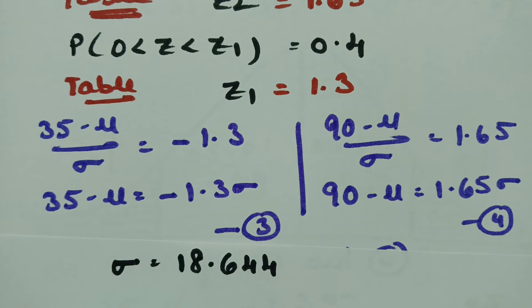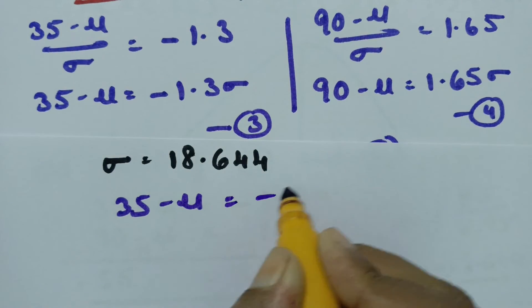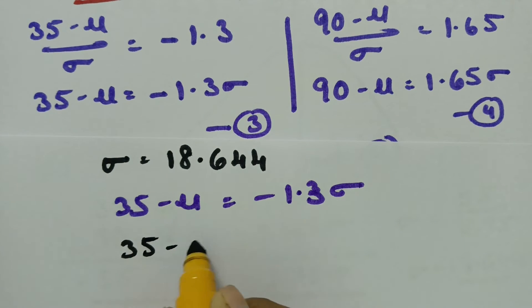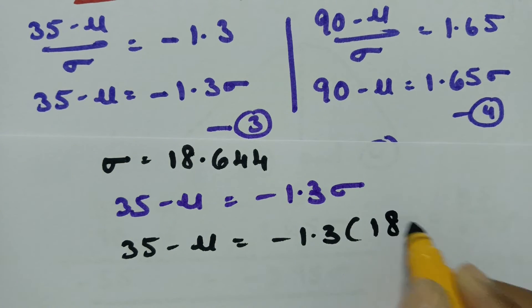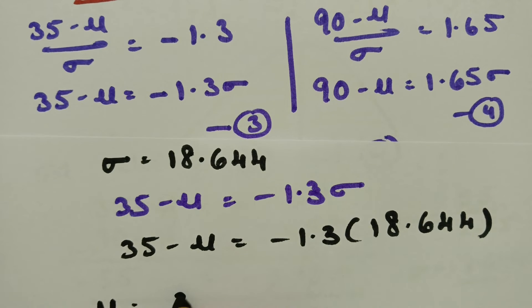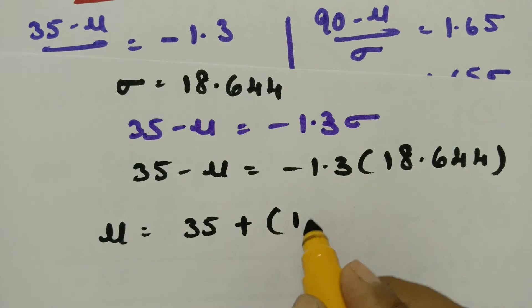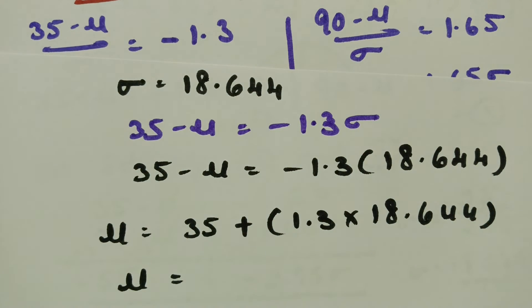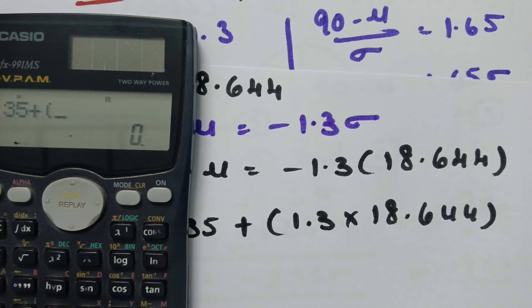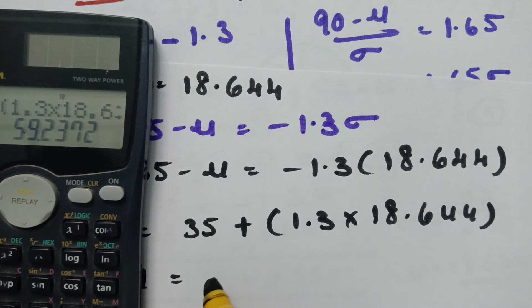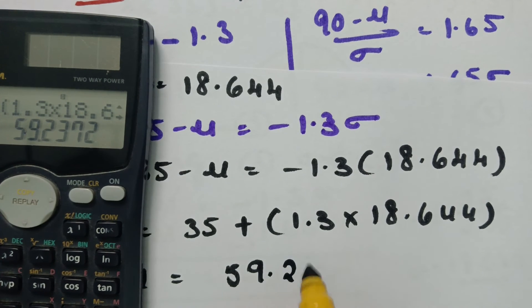After getting the sigma value, I will substitute in equation 3. According to equation 3: 35 minus mu equals minus 1.3 into sigma. Substituting sigma equals 18.644: 35 minus mu equals minus 1.3 into 18.644. So mu equals 35 plus 1.3 into 18.644, which gives mu equals 59.2372.